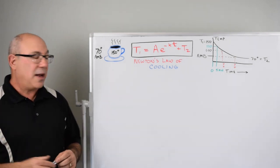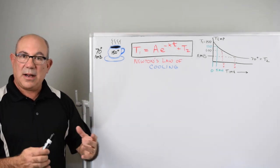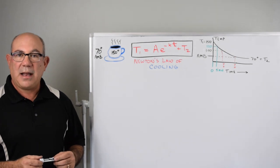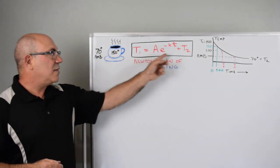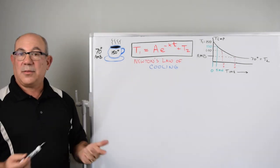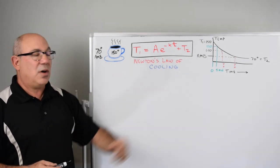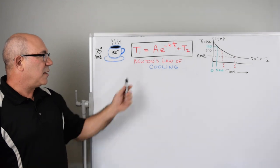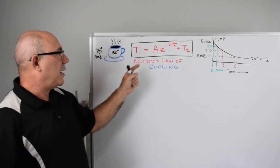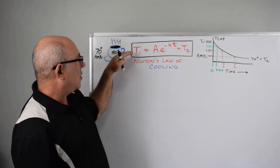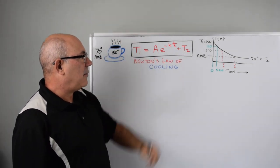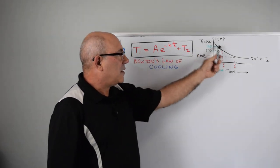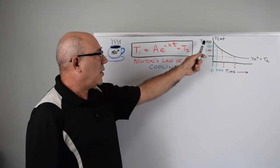We start out with a cup of coffee at 150 degrees Fahrenheit sitting in 70 degree ambient temperature. Newton's law of cooling is defined by this equation - it's an exponential equation that goes along with this graph. You can see this is going to start at some temperature and drop down to an ambient temperature exponentially.